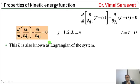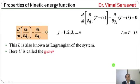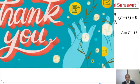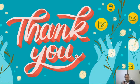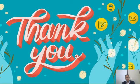If the potential is not velocity-dependent, then the Lagrangian is L = T - V. Here U is called the generalized potential. We end our lecture here. In this lecture, we have studied Lagrange's equation of motion of the second kind and the properties of kinetic energy function.